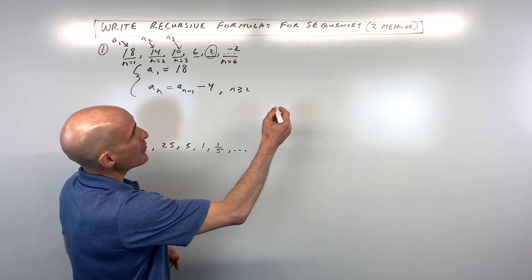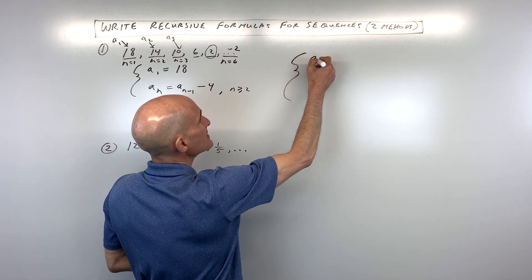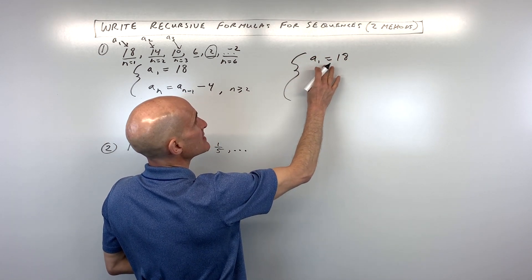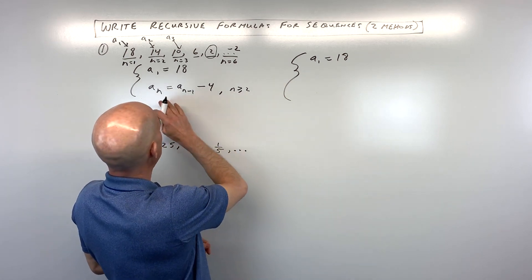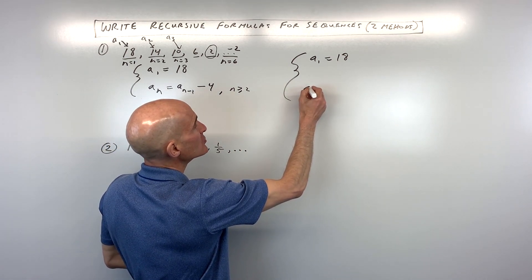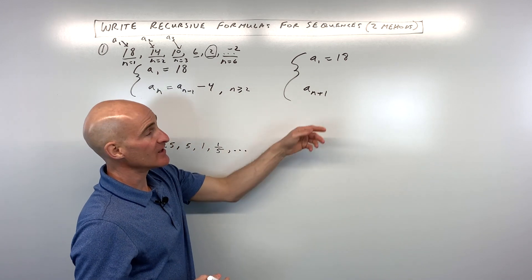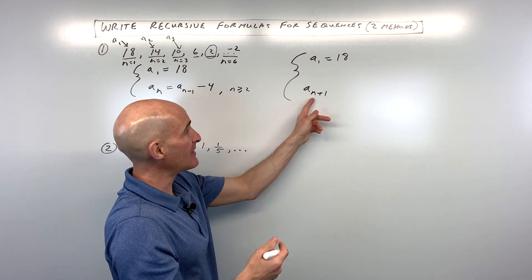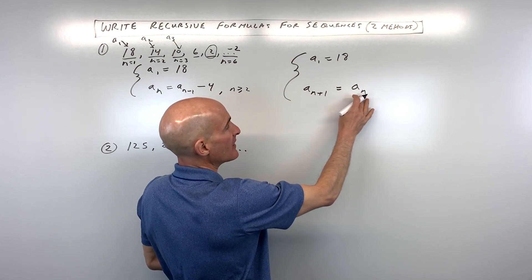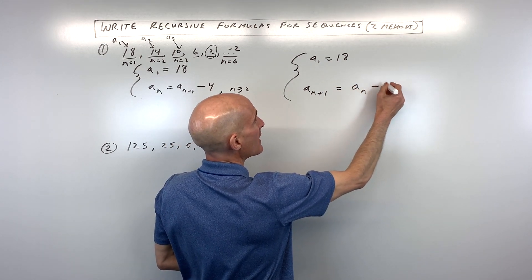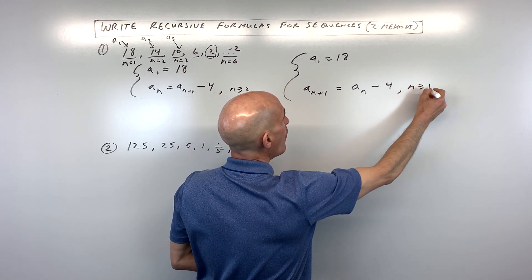So this is one method. The other method that sometimes is used is like this. They'll say a sub 1 is equal to 18. So that's the value of the first term. We need some starting point. But then how do we get to the next term? Well, here we did a sub n. In this one, I'm going to do a sub n plus 1. So that's one term beyond the nth term. So you're going to take whatever the nth term is, a sub n, that value, and you're going to subtract 4. But now I'm going to say when n is greater than or equal to 1.